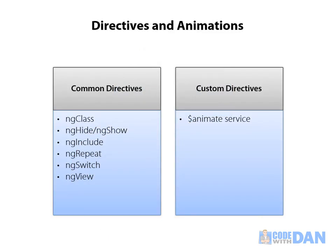Here's a quick look at some of the key directives that support animations. You have ngClass, which is used to apply classes dynamically to a given tag — as that class changes, you can apply different animations. ngShow and Hide are very useful with animations, because as you hide something you might want to fade it out. ngInclude is used to include child views, and as that view is loaded or leaves, you can apply effects. ngRepeat has great animation support, and you can apply eye-popping effects or subtle ones as you work with your collections. ngSwitch and ngView also support animations as well.